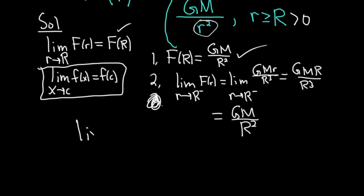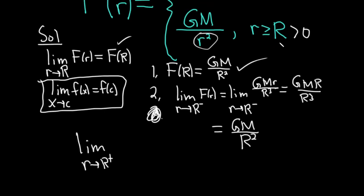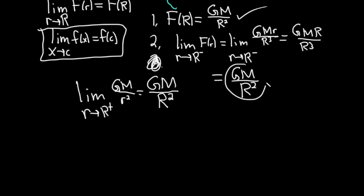Let's check from the right. We take the limit as little r approaches big R from the right. In this case, we would use this piece here, right? Because R is bigger than big R. So a lot of r's here. So this would be gm over little r squared. And you can just plug in big R, so you get gm over r squared. So r squared. So they're the same, so therefore the limit exists, right? Because from the left, we got this result. From the right, we got this result. Therefore, the limit as little r approaches big R of F of R is equal to gm over r squared. So the limit certainly exists.